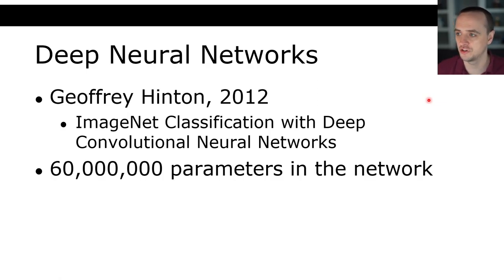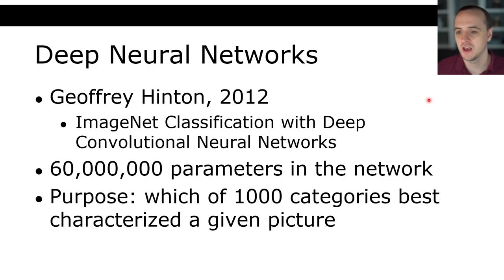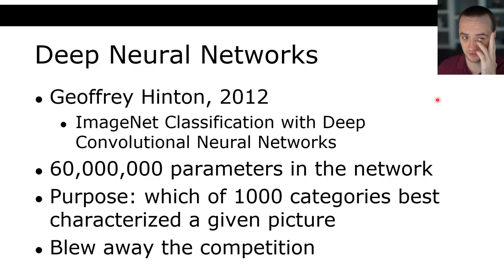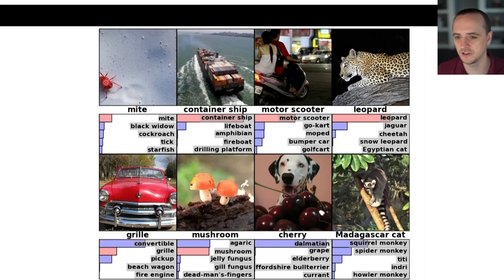Deep neural networks are just huge neural networks — there were 60 million parameters in the network, essentially millions of weights. The purpose was saying which of 1,000 categories best describes this picture. It absolutely blew away the competition — it was able to solve lots of instances of problems that were previously unsolved, like classifying a motor scooter or a container ship.